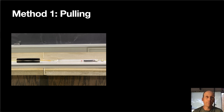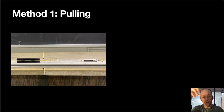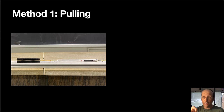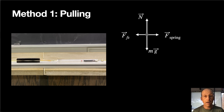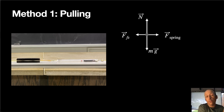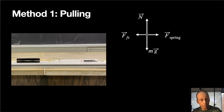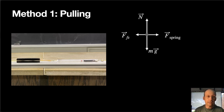Method one — I think this makes the most sense to people: basically just pull the block. I have a metal block on a metal track and I'm going to pull it with a spring scale. As soon as it starts to move, I read the scale. Right at that point, we're at the maximum friction force — the equal part of the less-than-or-equal-to — so all forces add up to zero.